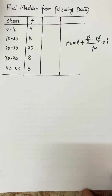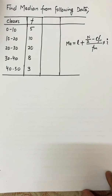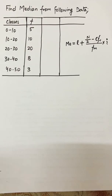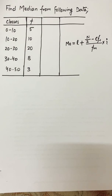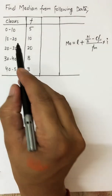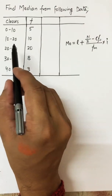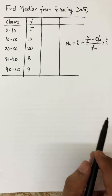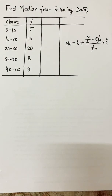Hello everyone. In this video I'm going to calculate the median from continuous data. The question in front of me is: find the median from the following data. I have been given classes as well as frequencies — the first class is 0 to 10 with frequency 5, the second class is 10 to 20 with frequency 10, and so on.